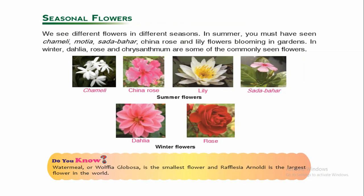Now, seasonal flowers — we see different flowers in different seasons. In summer you must have seen Chameli, Motia, Sadabahar, China Rose, and Lily flowers blooming in gardens. In winter, Dahlia, Rose, and Chrysanthemum are some of the commonly seen flowers. Here you can see some flowers — summer flowers and winter flowers.